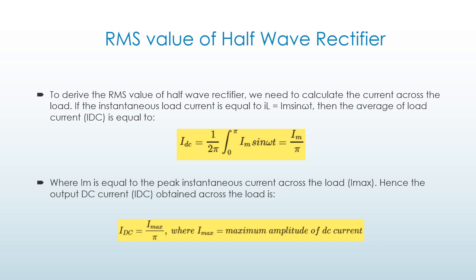Where IM is equal to the peak instantaneous current. The output DC current IDC obtained across the load is equal to I-maximum upon pi, where I-maximum is equal to the maximum amplitude of DC current.